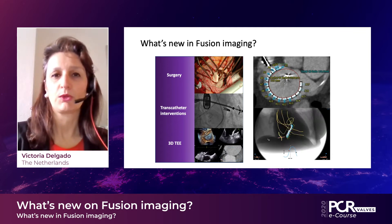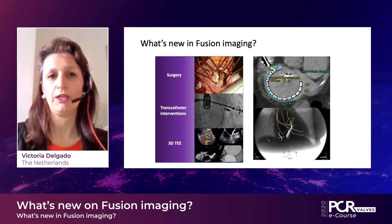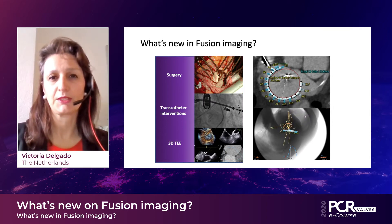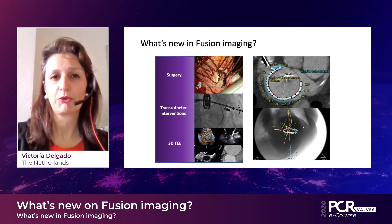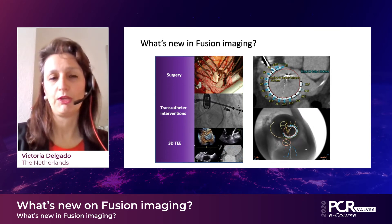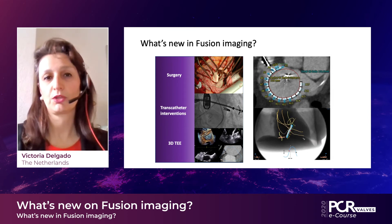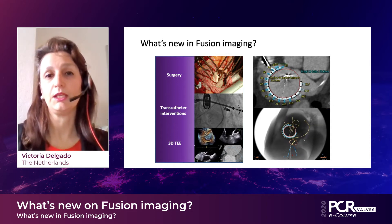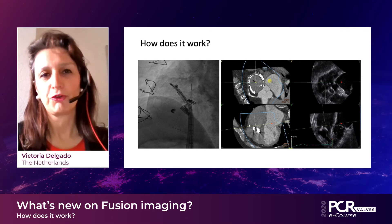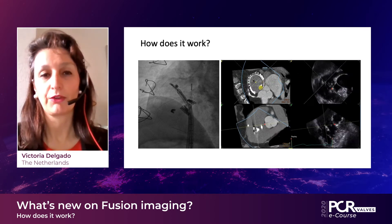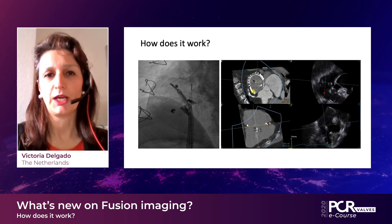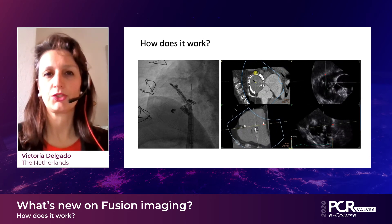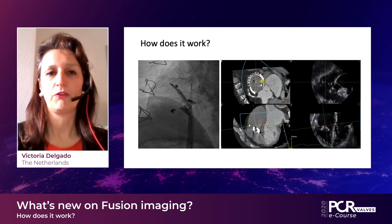With fusion imaging techniques, we use echocardiography, fluoroscopy, and CT, fusing them together to provide guidance for the interventionalist. General Electric has developed a tool that fuses three-dimensional transesophageal echocardiography with CT, so the structures that are not seen with three-dimensional echocardiography can be seen together with the CT used to plan the intervention. This fusion gives the interventionalist a reference to understand what is seen on the fluoroscopy as well.